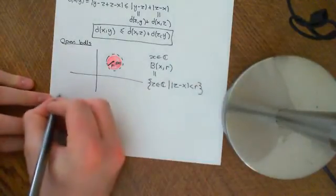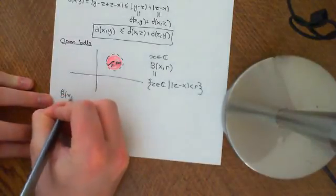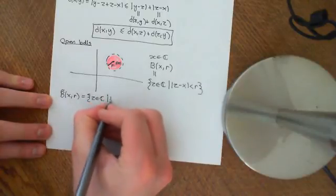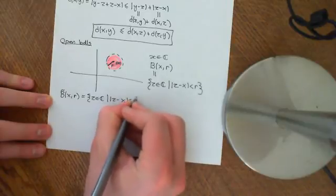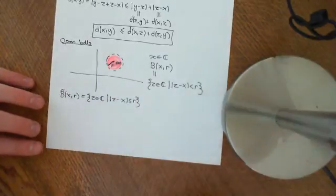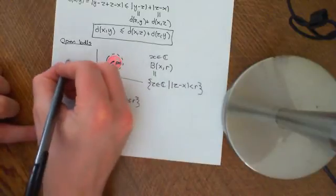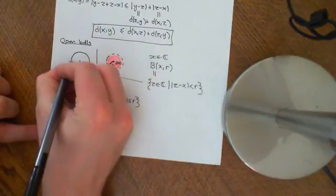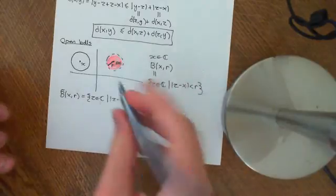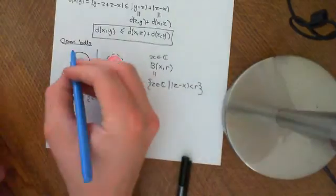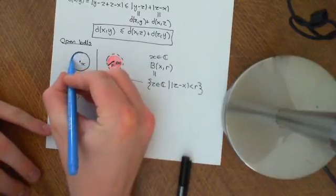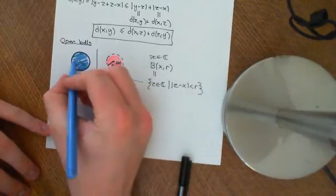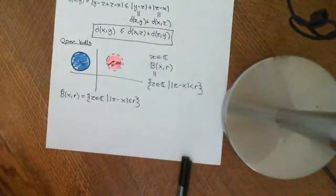The closed ball around a point X of radius r consists of all complex numbers Z such that the modulus of Z minus X is less than or equal to r. It is drawn with a solid line and includes all points within and on that boundary — absolutely all of those points.